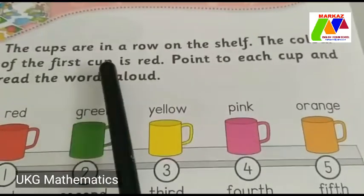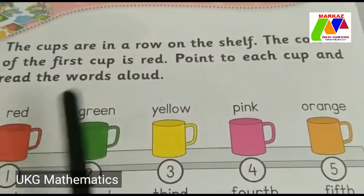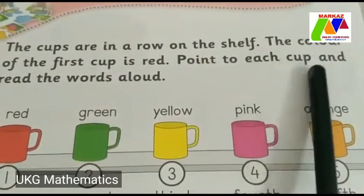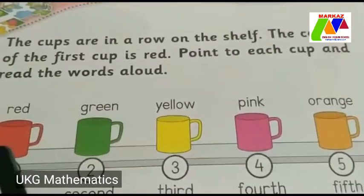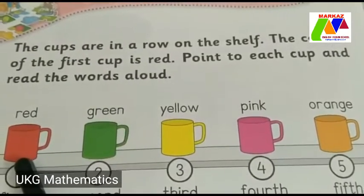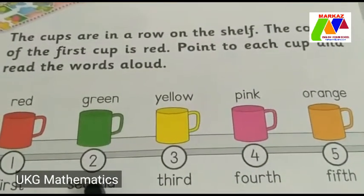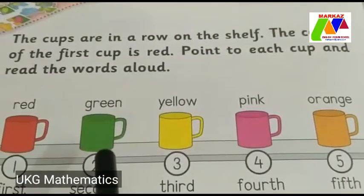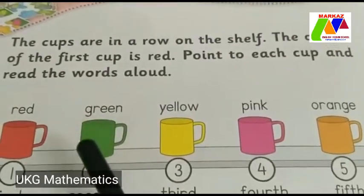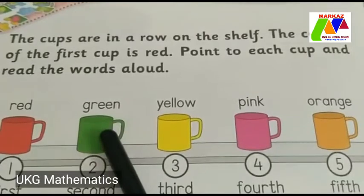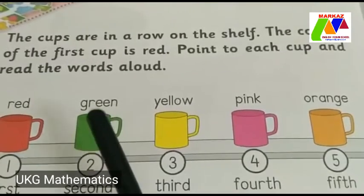The color of the first cup is... which color is this, children? Red. Very good. Point to each cup and read the words aloud. The first cup is red color. Then, next, second position. Which is the color of the second cup? Green color. The color of the second cup is green.